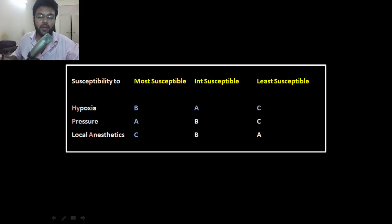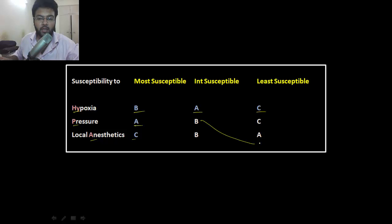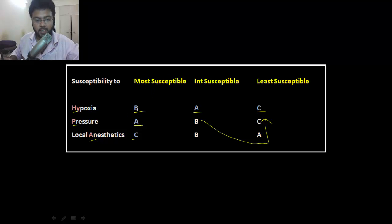This is the classification of nerve fiber according to susceptibility to hypoxia, pressure, and anesthesia. Hypoxia, pressure, anesthesia are on the left — B, A, C are on the right. So the most susceptible to hypoxia is B, most susceptible to pressure is A, and most susceptible to anesthesia is C.